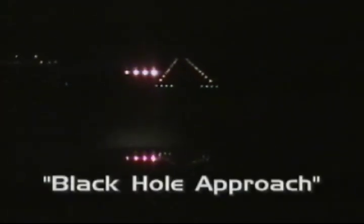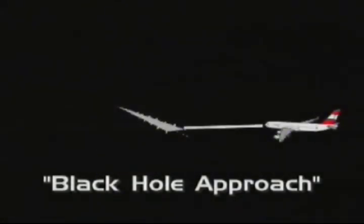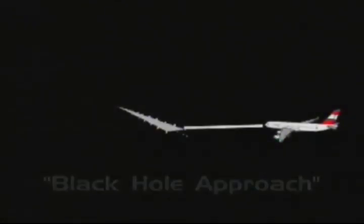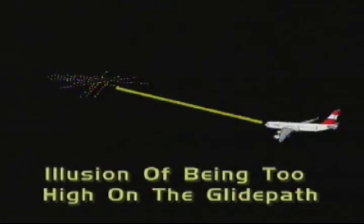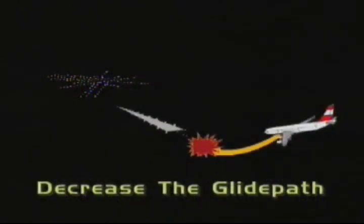Night flying has illusions also. A final approach during a dark night with no stars or moonlight, no lights before the runway, and city lights or rising terrain beyond the runway is known as a black hole approach. An approach under these conditions may produce a visual illusion of being too high on the glide path. If you believe this illusion, you may respond by pushing the aircraft nose down to decrease the glide path, which could cause you to land short of the runway.